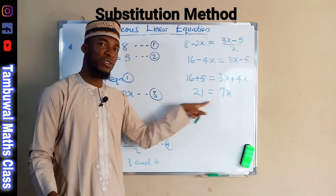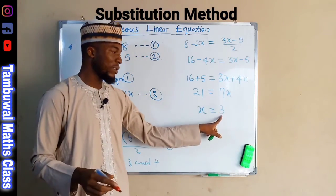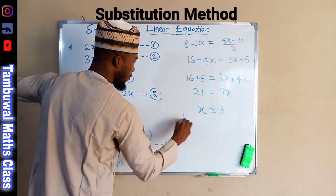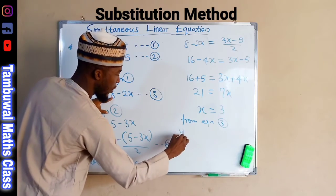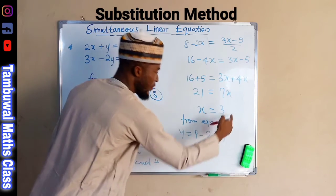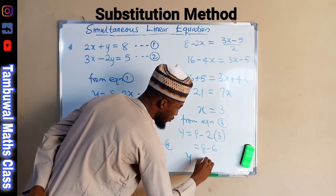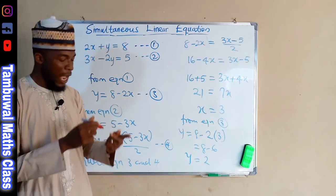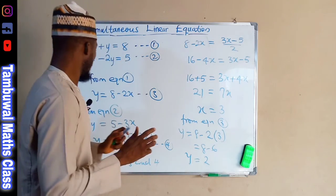Dividing both sides by 7, x equals positive 3 because 21 divided by 7 is 3. To find y we use equation 3: y equals 8 minus 2 times 3, which equals 8 minus 6, so y equals positive 2. We can see that both forms of substitution arrive at the same result: x equals 3 and y equals 2.